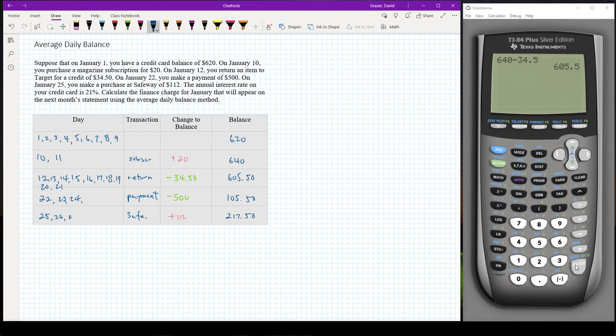All right, so now we need to figure out our average daily balance. And to do that I need to know how many days I had that balance and what the balance was. So for this first one, the 1st, 2nd, 3rd, 4th, 5th, 6th, 7th, 8th, 9th, that's nine days.